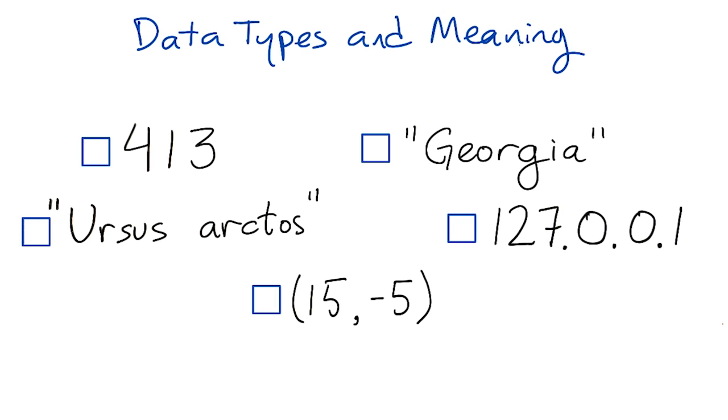To think about this more clearly, let's have a quiz. Here are five pieces of data. Think about what type each of these is, and mark the checkboxes next to two pieces of data that definitely have the same type.